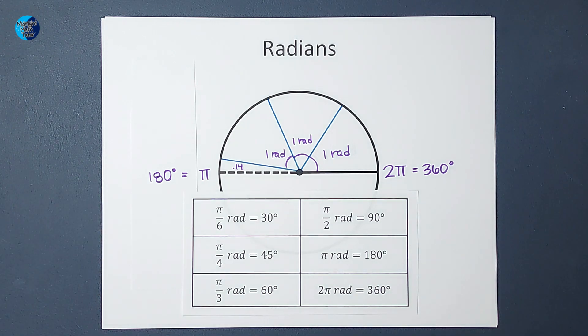Now, these are standard ones that you will see a lot, but we can convert any degrees to radians and any radians to degrees. We do that by either multiplying by π over 180 or 180 over π. And I will link some videos for you in the corner about that. But hopefully this made sense. Thanks!